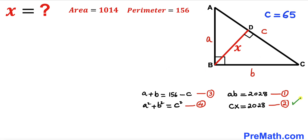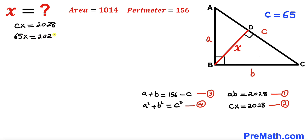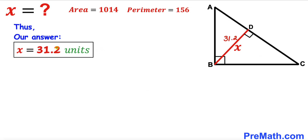For the final step, we recall Equation 2: c times x equals 2028. Substituting c equals 65, we get 65 times x equals 2028. Dividing both sides by 65, x equals 31.2 units. After all the calculations, our final answer is x equals 31.2 units. Thanks for watching — please don't forget to subscribe to the channel for more exciting videos!